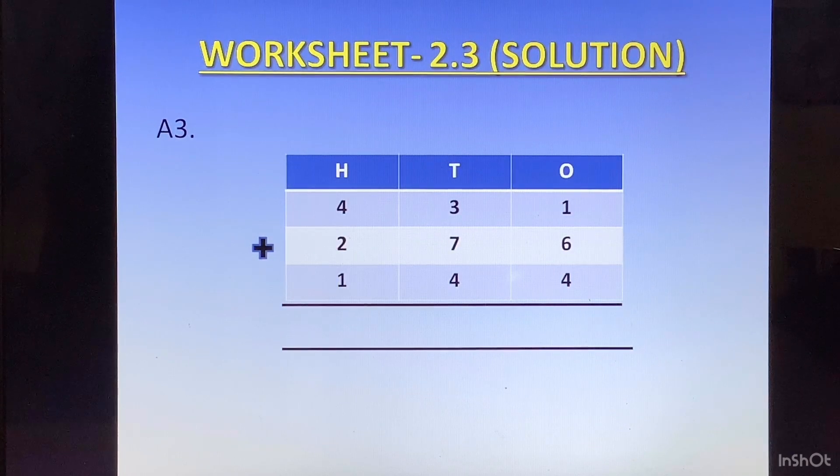Question 3. We have 431 plus 276 plus 144. We will start with the ones column. 1 plus 6 is 7. 7 plus 4 is 11. 1 at the top of tens column, 1 at the bottom of ones column.